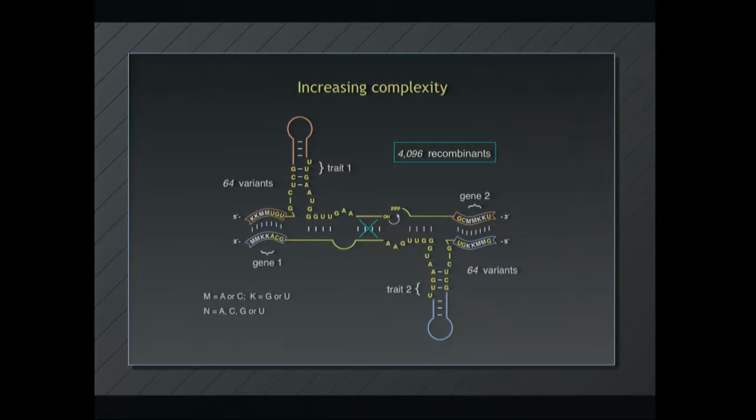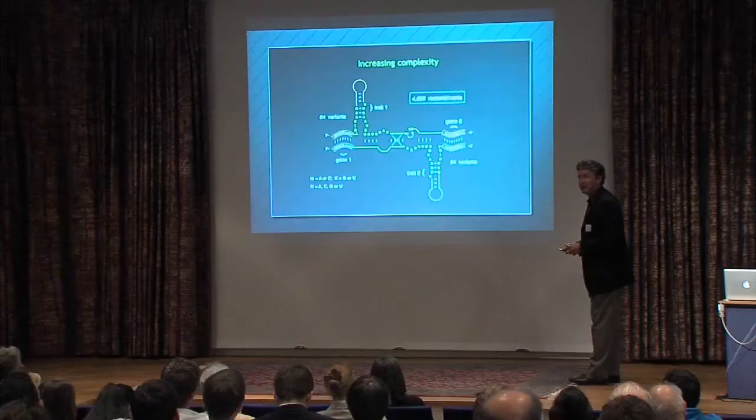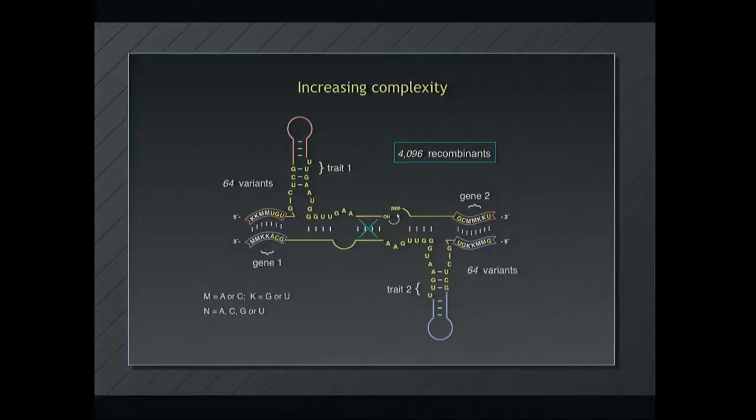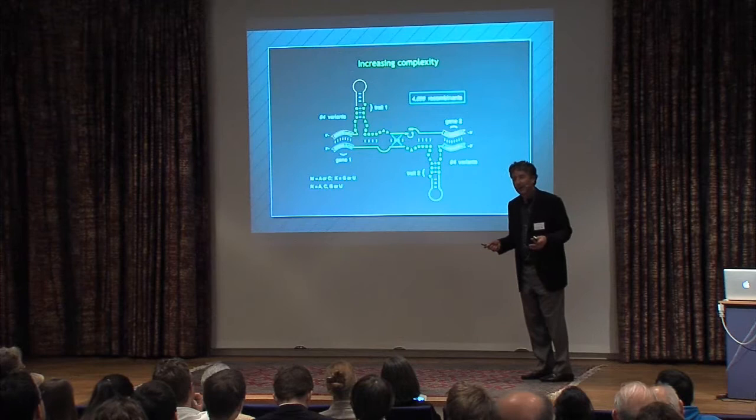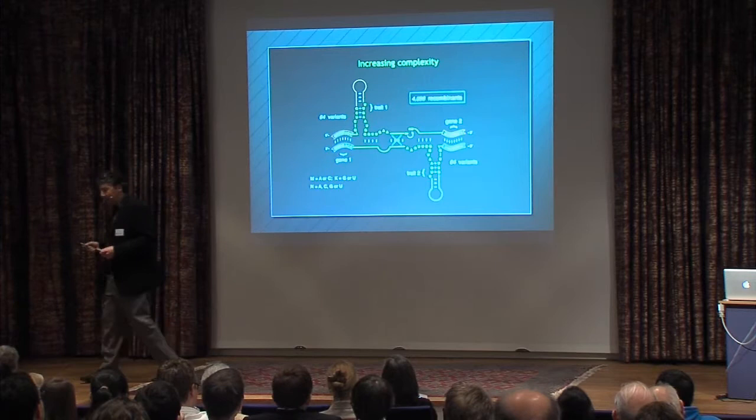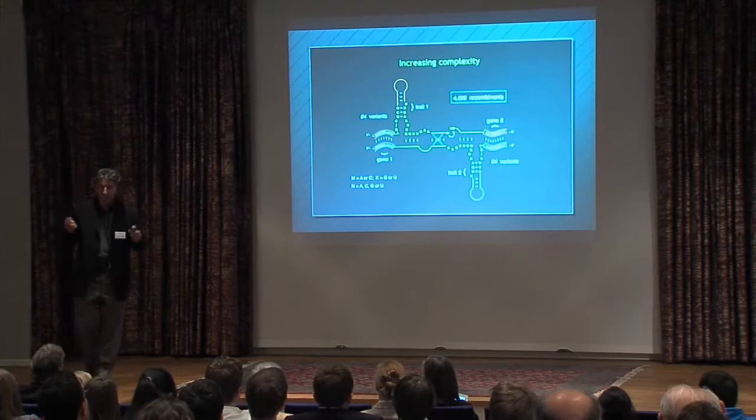So here's the next experiment. This is not yet published, where we made a more complex set of 64 variants in gene 1 and 64 variants in gene 2. And the way this is set up, actually, is it's what's called a KKNM library, where K is either G or U. So two possibilities at this position, two possibilities at that position. M is A or C. Two possibilities here, two possibilities here. So that combinatorial library of genes was inserted in each of the two different loci. In this experiment, what we did was we placed the exact same trait in combination with all the different genes. And we thought that was an important first experiment to do. Why? Because we're worried about the extent to which genotype has phenotype.